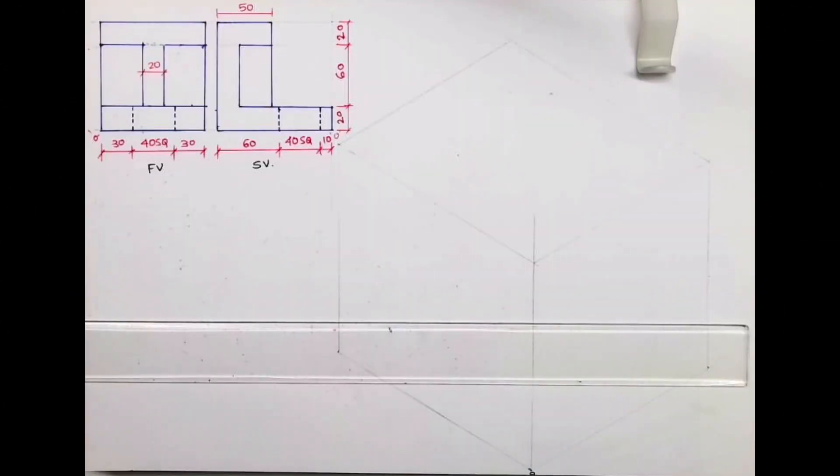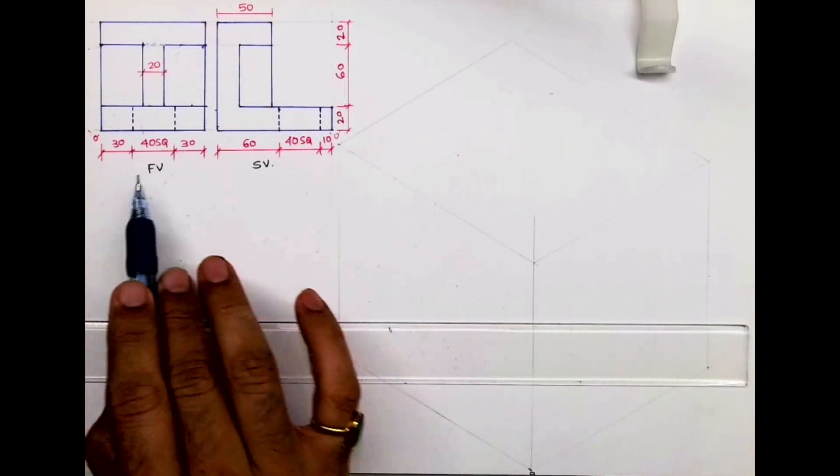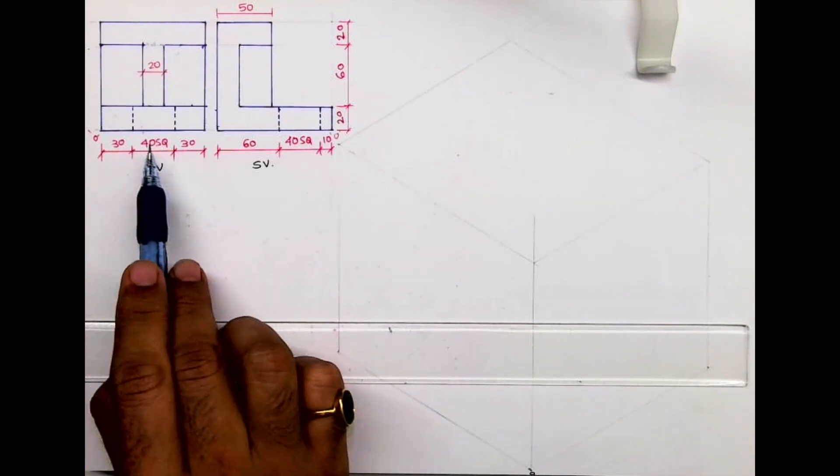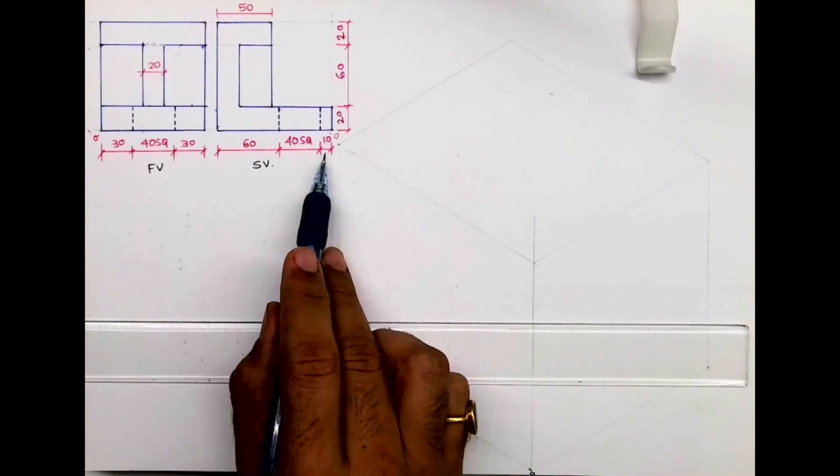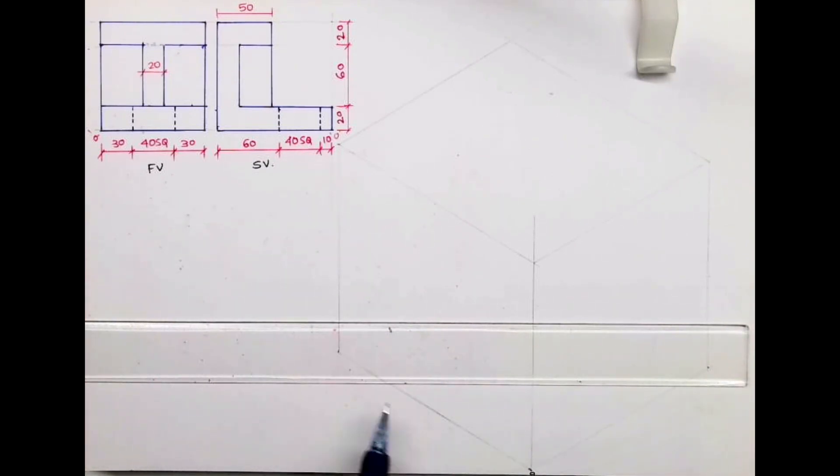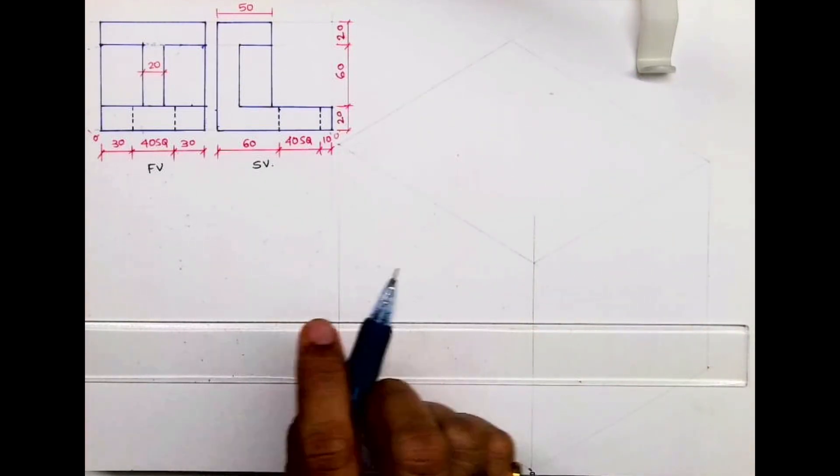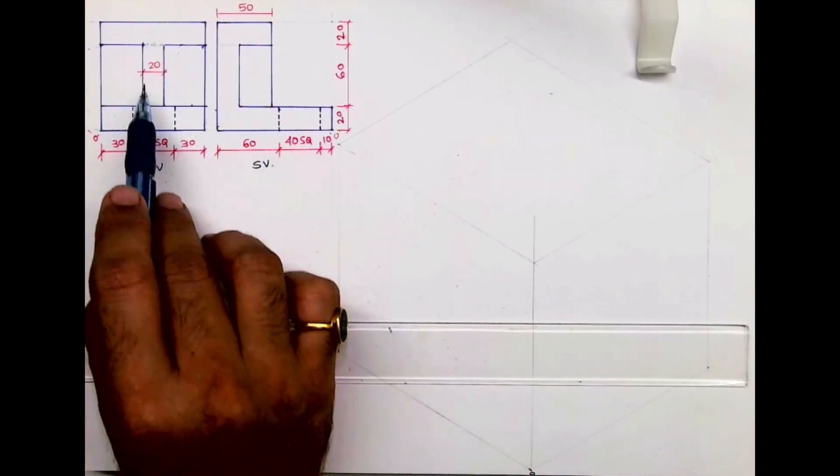Welcome to technical drawing. Today we'll see this sum in isometric. We have front view, side view. Length is 30, 40, 30, that is 100 on right side. On left side 10, 40, 60, 110 and height is 100. So first we will draw layout, after drawing layout we'll see front view and side view. So in front view we have this part, this part, and inside we have this C shape and this rectangle.